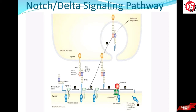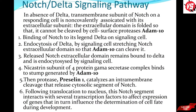The fourth point indicates that the gamma-secretase enzyme cleaves the transmembrane unit. There is also alpha-secretase cleavage. Presenilin-1 is the protease involved as a component of gamma-secretase. This releases the cytosolic portion of Notch. Next, translocation to the nucleus occurs, where it acts as a transcription factor to affect gene expression — completing the Notch-Delta signaling pathway.